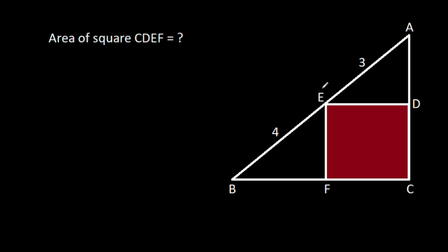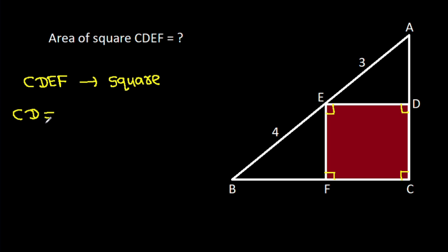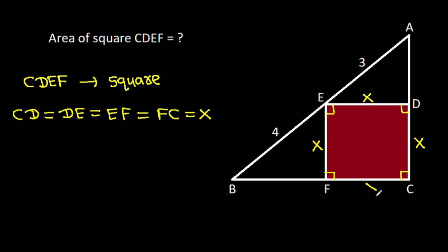In this video, we have been given that AE is 3, BE is 4, and we have to find the area of square CDEF. CDEF is a square, which means these angles will be 90 degrees. Also, CD = DE = EF = FC. Suppose each side is X, so CD is X, DE is X, EF is X, and FC is X.